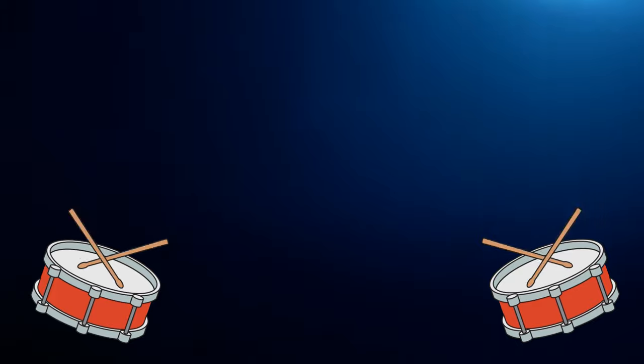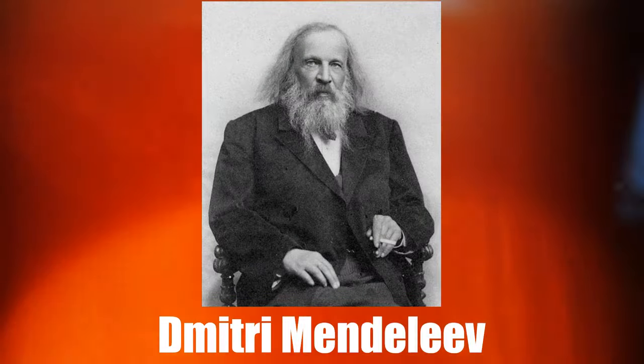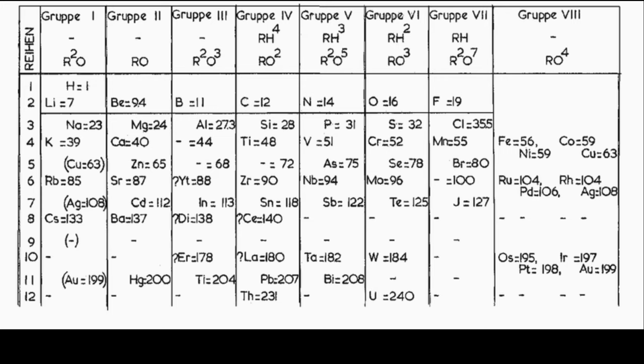But now, here comes the real deal, the name most of you have probably heard of at least once: Dimitri Mendeleev. In 1869, he got the 63 elements known at that time, and arranged them by atomic weight, but also keeping in mind their properties, their valence.